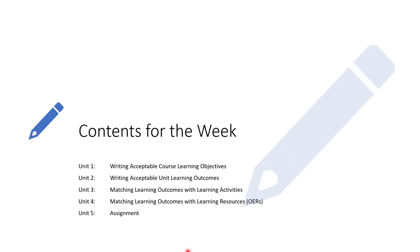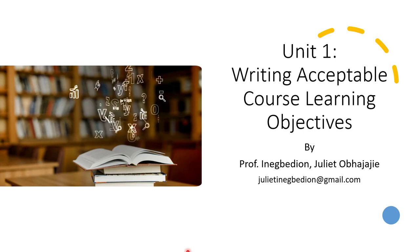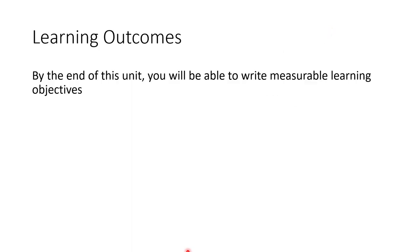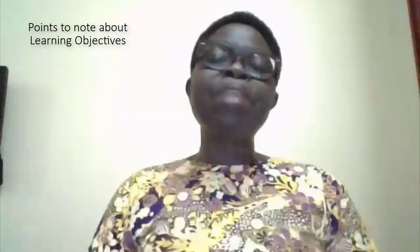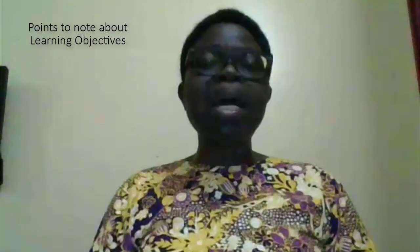Let's start with unit one: writing acceptable course learning objectives. The learning outcome for this unit is that you will be able to write measurable learning objectives by the end of this unit. Key points to know about learning objectives: first, they are stated in more specific terms than learning goals.